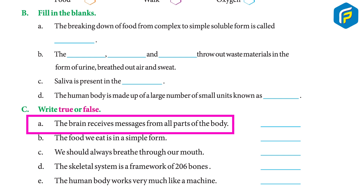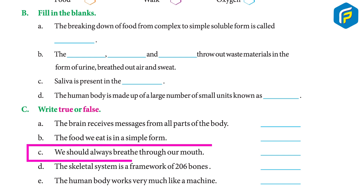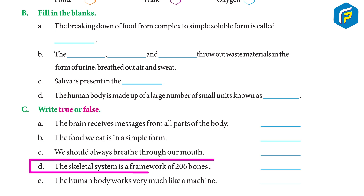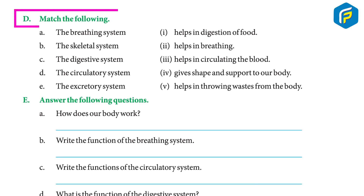Exercise C — True or False: (a) The brain receives messages from all parts of the body — True. (b) The food we eat is in a simple form — False. (c) We should always breathe through our mouth — False. (d) The skeletal system is a framework of 206 bones — True. (e) The human body works very much like a machine — True.